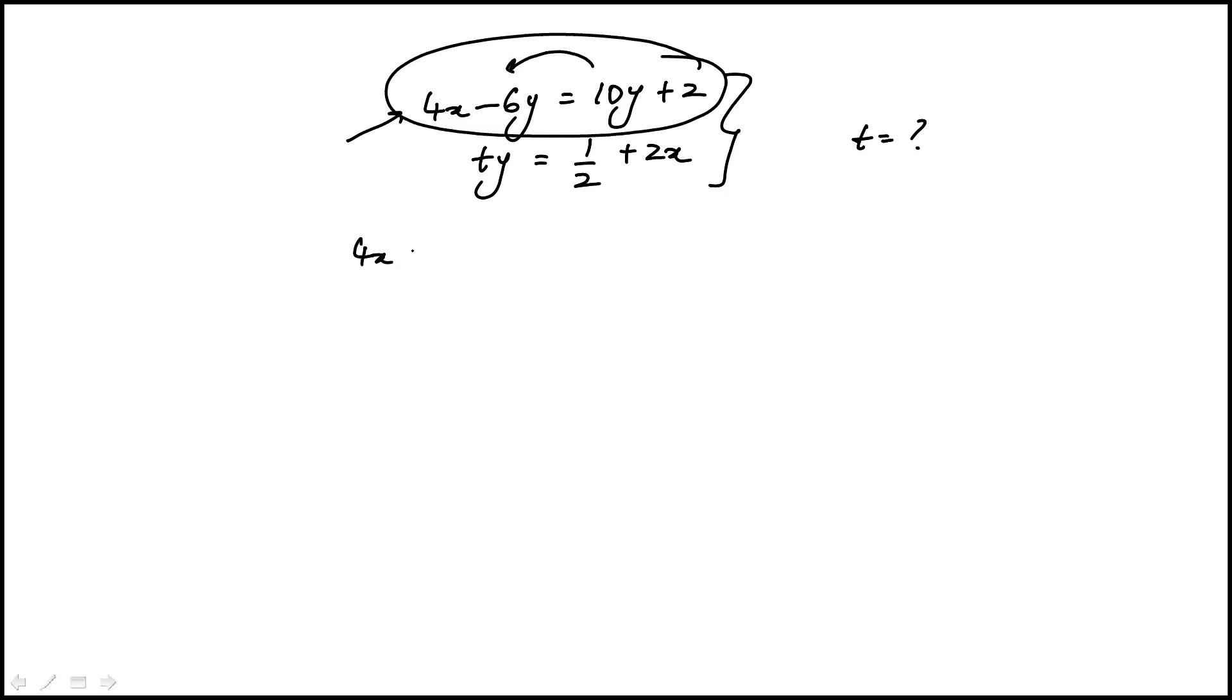So 4x minus 16y equal to 2, then I'm going to divide by 2.